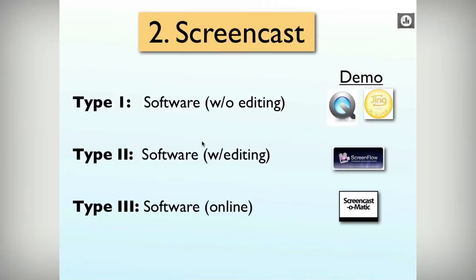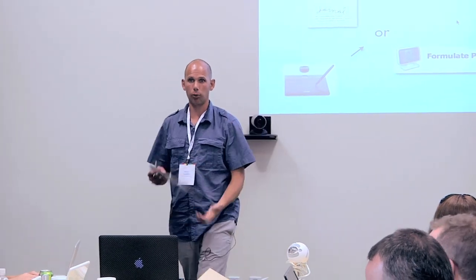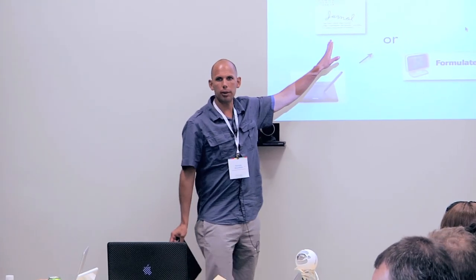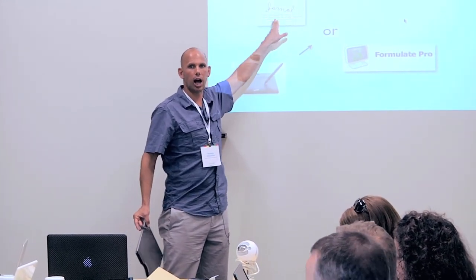For the online software, I recommend ScreenCast-O-Matic. On the Mac platform, if you just want to start tonight, take your Bamboo tablet, throw that into Jarnal — a really good open source PDF annotator — or into Formulate Pro. I use Jarnal for screencasts I do at home and Formulate Pro for things I do in class. Jarnal has more pen color options but is a bit funkier, so Formulate Pro is more stable for in-class use.